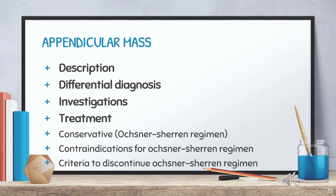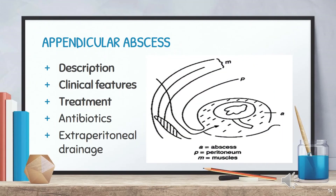Contraindications to the Oschner-Sherren regime: when diagnosis is in doubt, acute appendicitis in children and adults, burst gangrenous appendicitis, and when diffuse peritonitis has set in. Criteria to discontinue the regime include: patient becoming more toxic with tachycardia or high-grade fever, persistent vomiting, increase or spread of abdominal pain indicating onset of diffuse peritonitis, increase in size of mass, and suppuration or abscess formation within the mass. In these cases, the regime is discontinued and the patient is taken to the operating theater for immediate surgery via laparotomy or classical approaches.